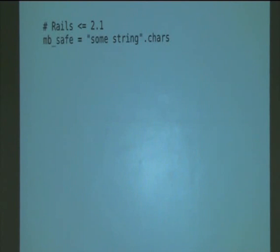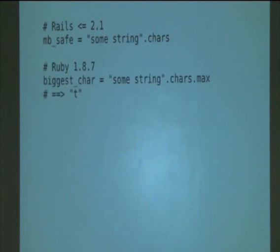But then, in August 2008, Ruby 1.8.7, which was just released at that point, added a completely different method of the same name intended to let you iterate over the characters of a string. So, you say, some string dot chars dot max, and that gives you the biggest character, which in this case is the T. And this meant that when people using the Rails version of chars upgraded from Ruby 1.8.6 to 1.8.7, their code stopped working. Which again is a problem. We don't want that to happen.